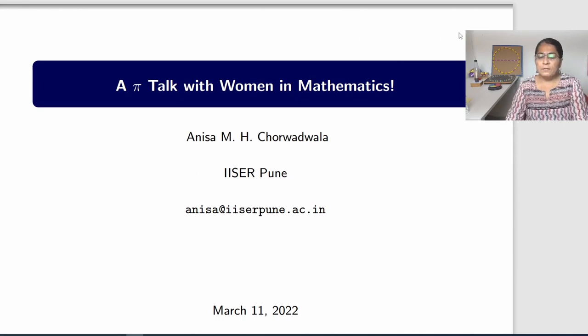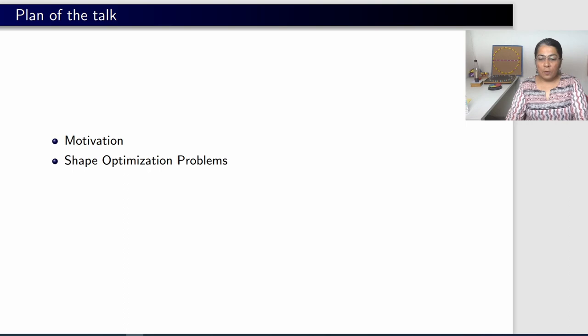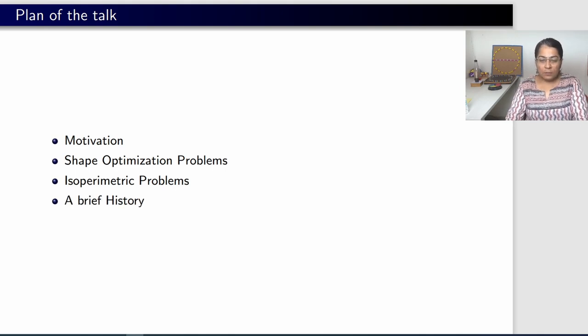I thank the Science Activity Center for giving me this opportunity to talk about women in mathematics. My presentation will mainly focus on how, even when women were not formally seen in mathematics, they were always there behind the scenes. I will start with the motivation and plan of my talk. The particular problem I'll describe is called shape optimization, and specifically the isoperimetric problem — its brief history and the story of Queen Dido.